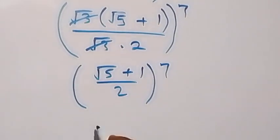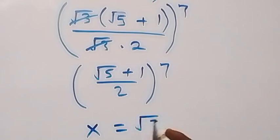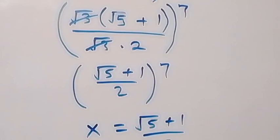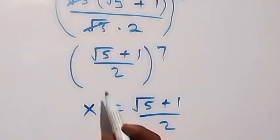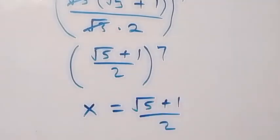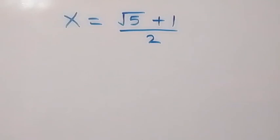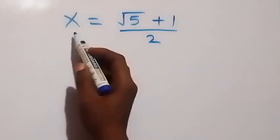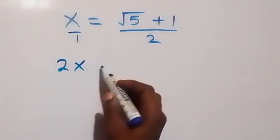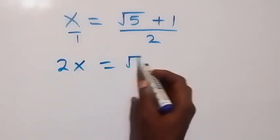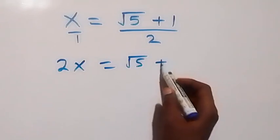Let x equal (root 5 plus 1) over 2. We are interested in finding x raised to power 7. Cross-multiplying gives us 2x equals root 5 plus 1.